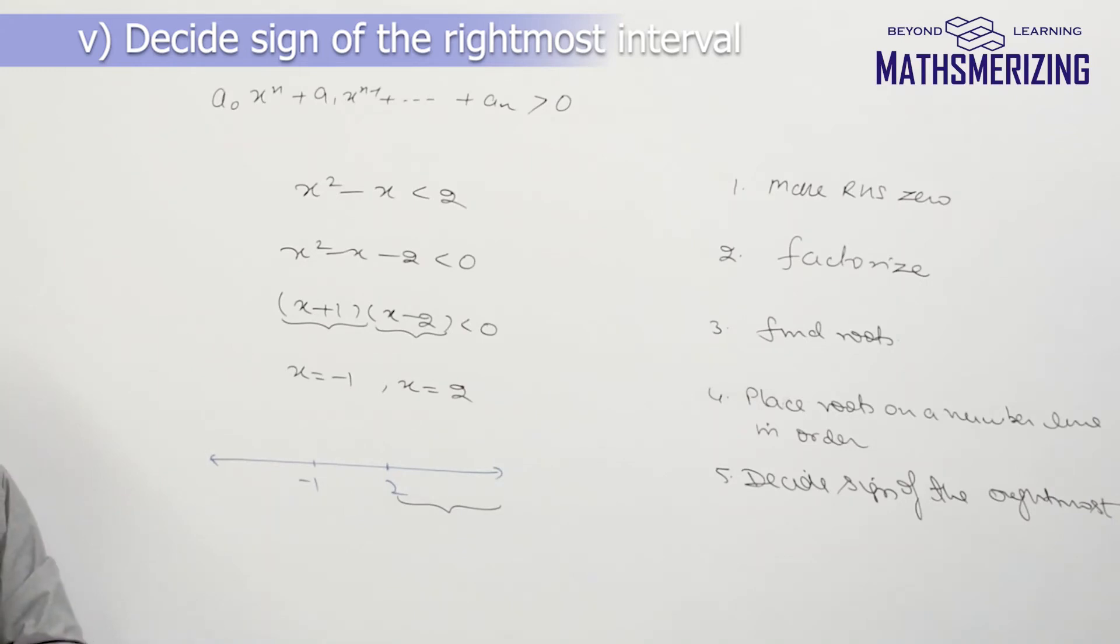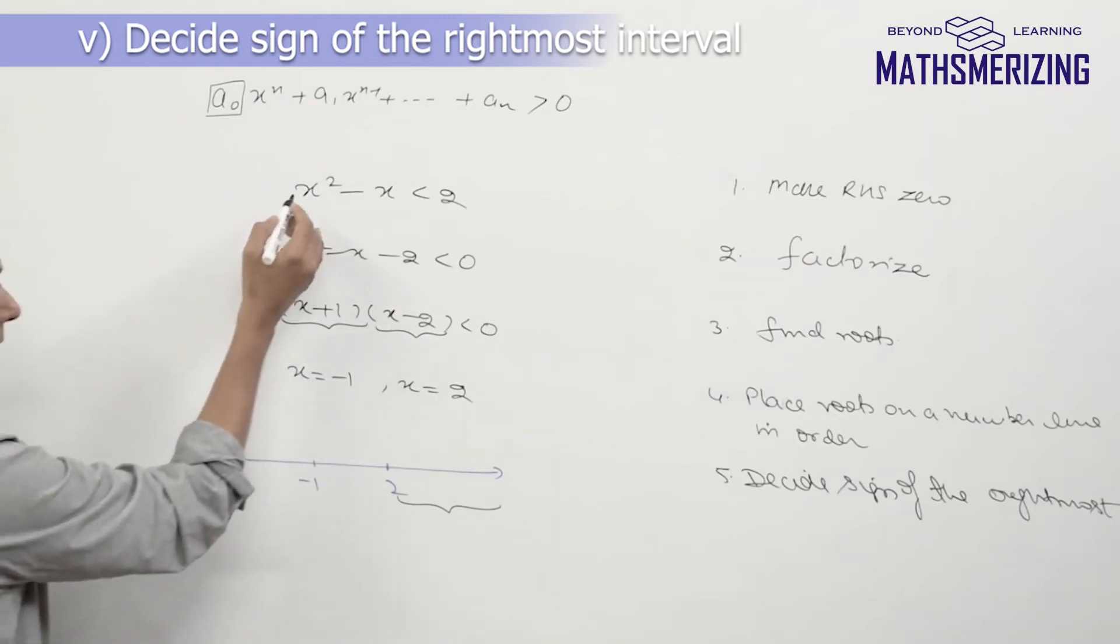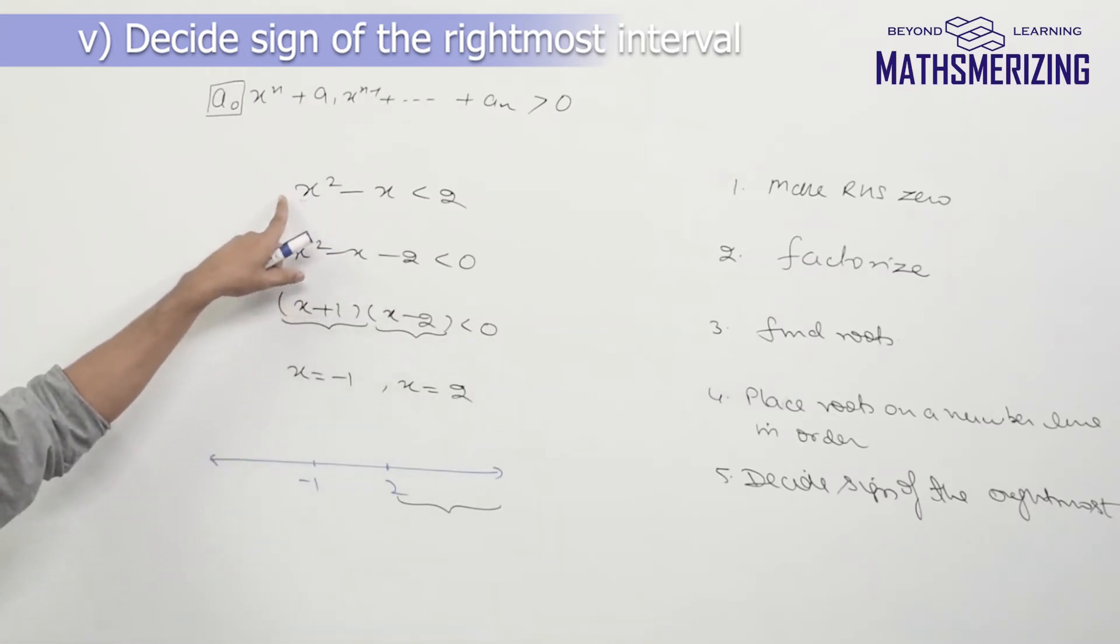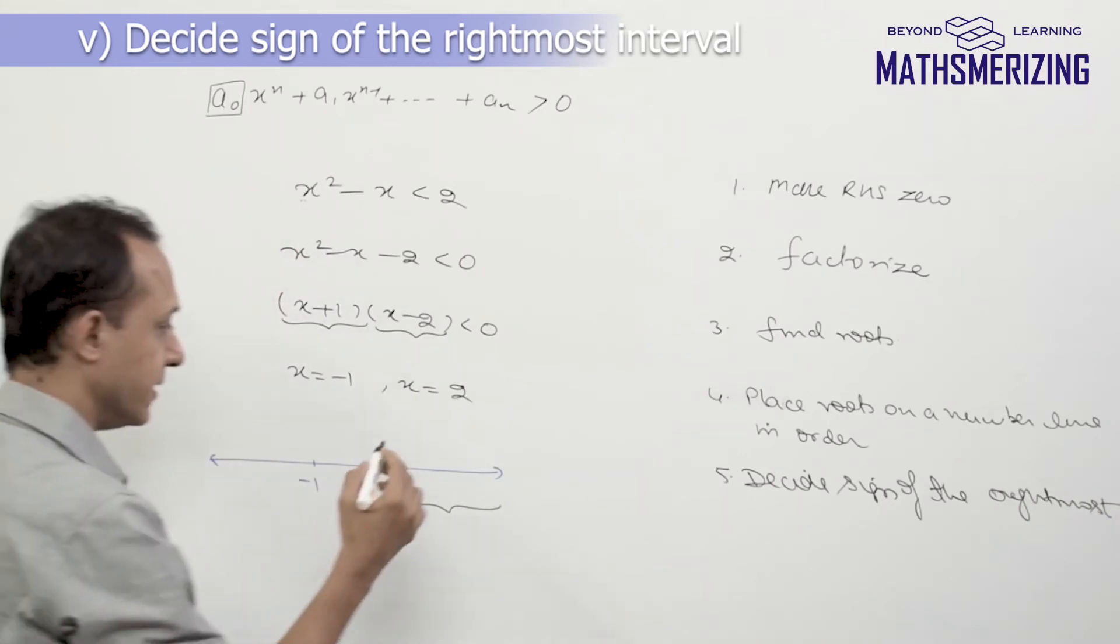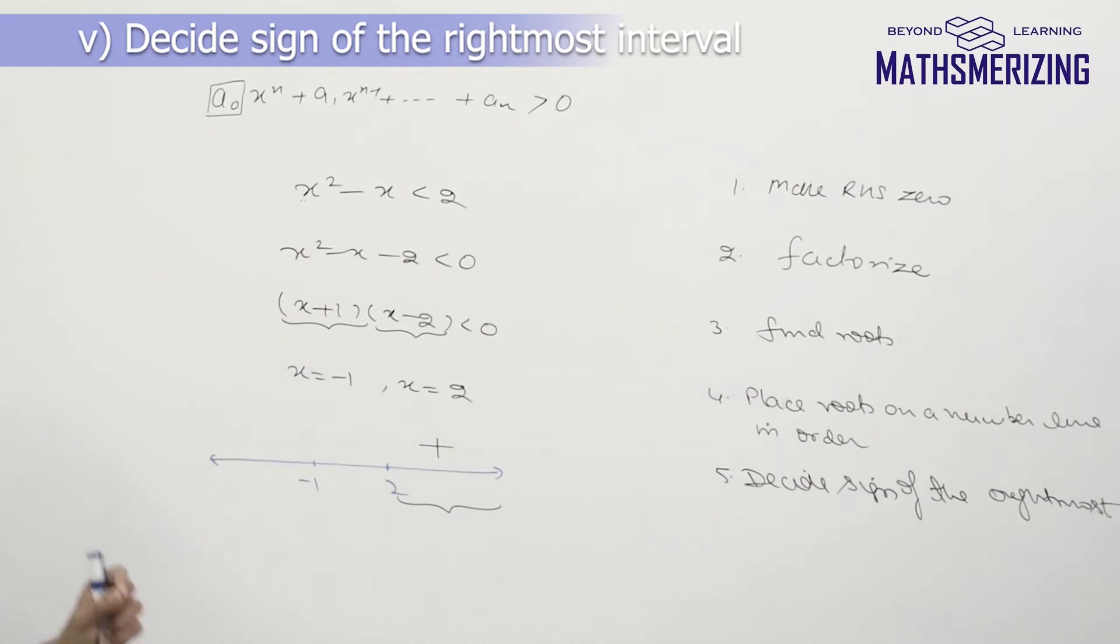There are three ways. One method is using the leading coefficient. In any polynomial the coefficient of the highest power of x is your leading coefficient. In this inequality the highest power is x² and the coefficient of x² is 1 which is positive. So that's the reason I'll put a plus sign there. So this is one way.